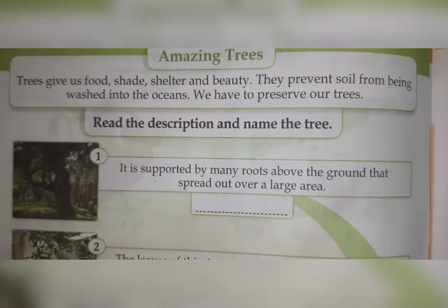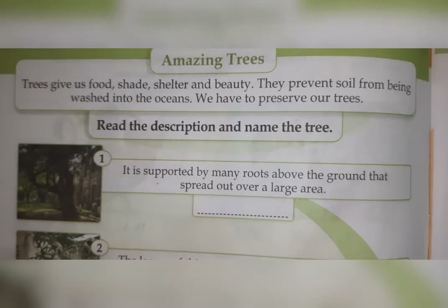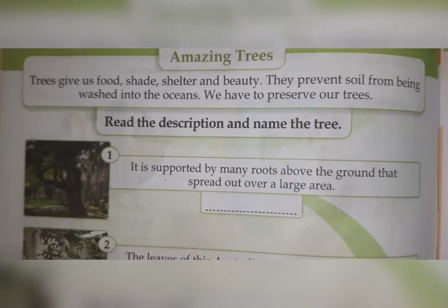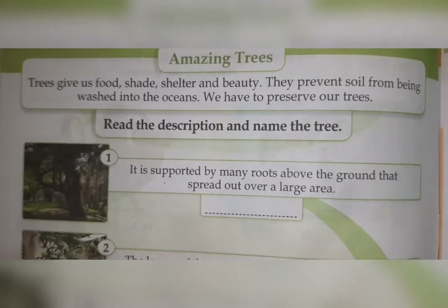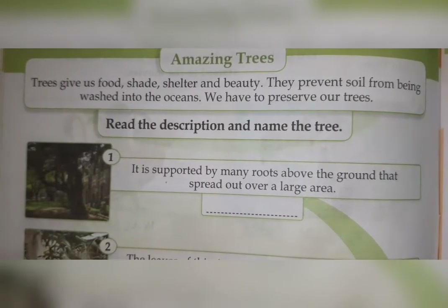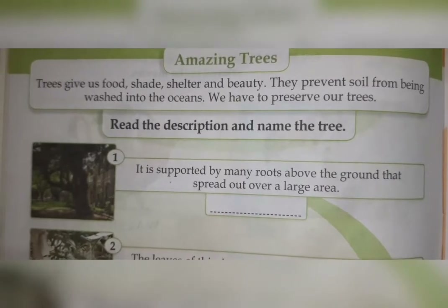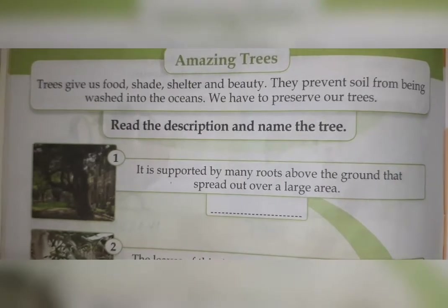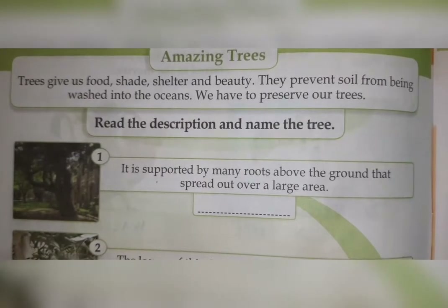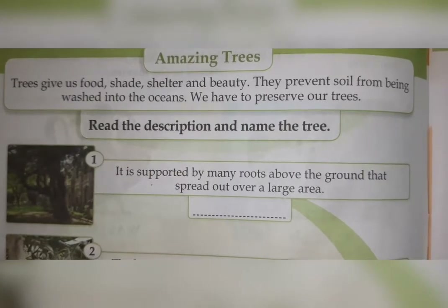Shelter means some birds make nests on the tree, so animals get shelter there. Trees give us beauty also — if we plant trees around our home, they give us flowers and all things, so our home's beauty will show through it.